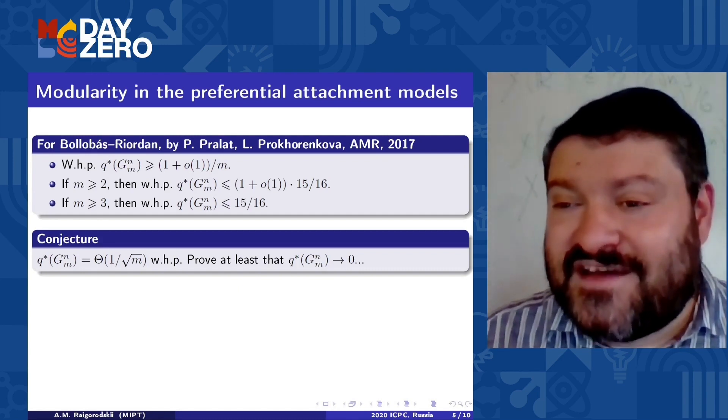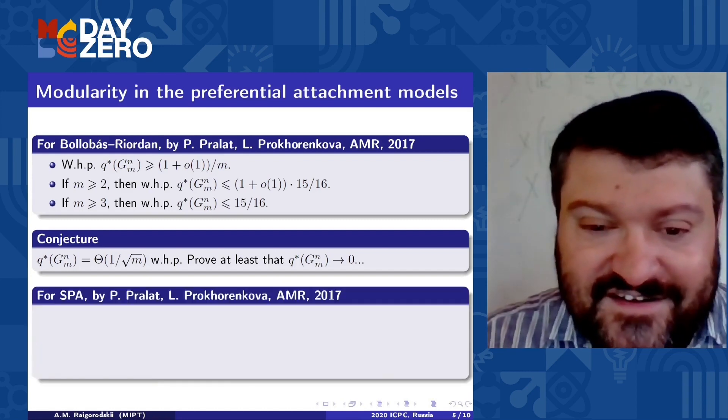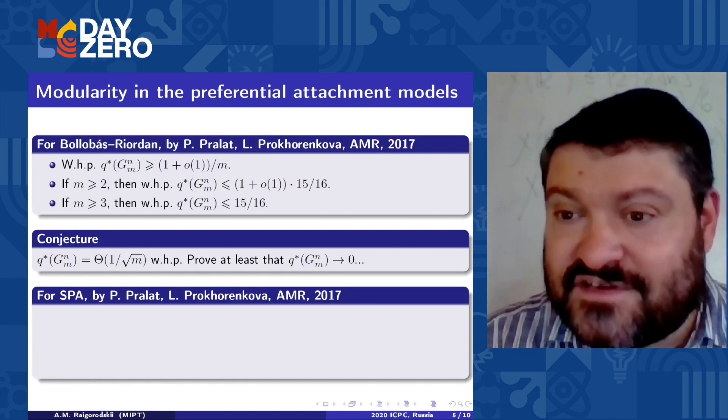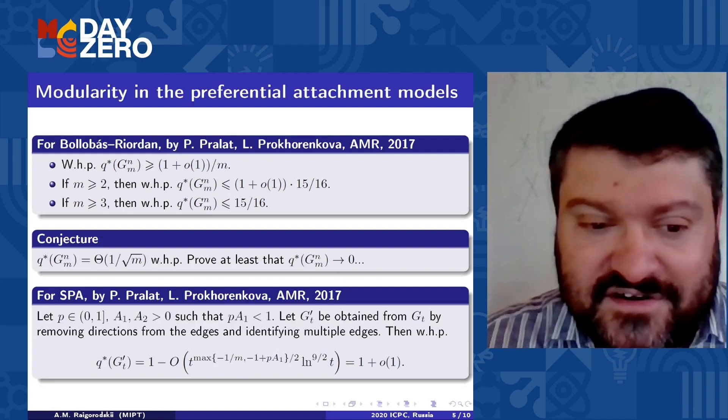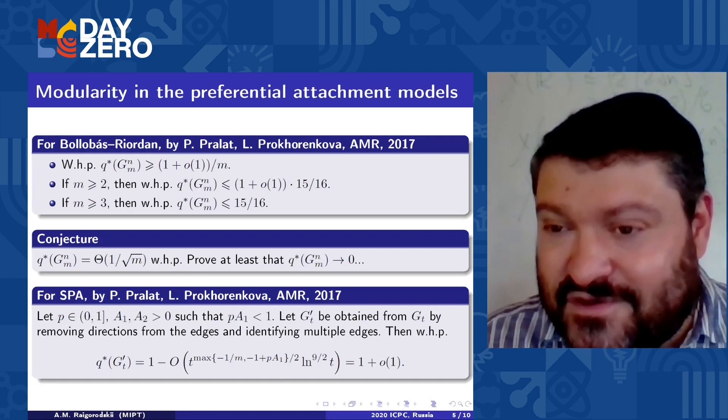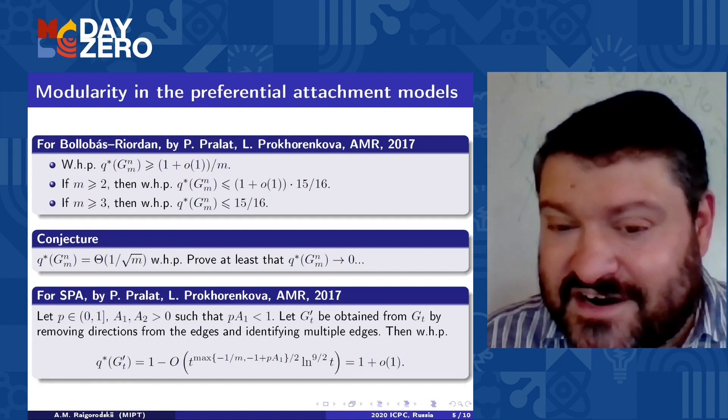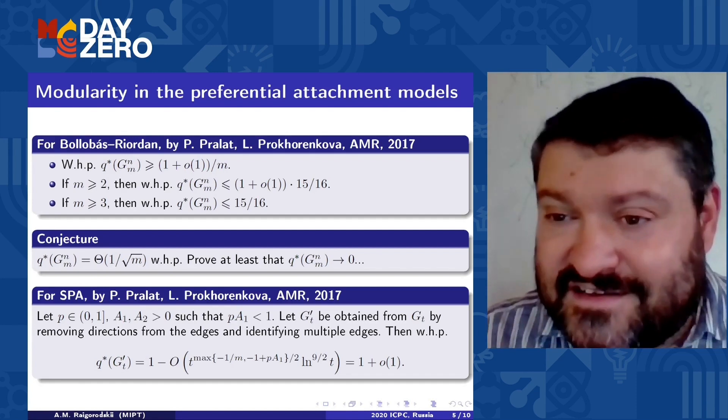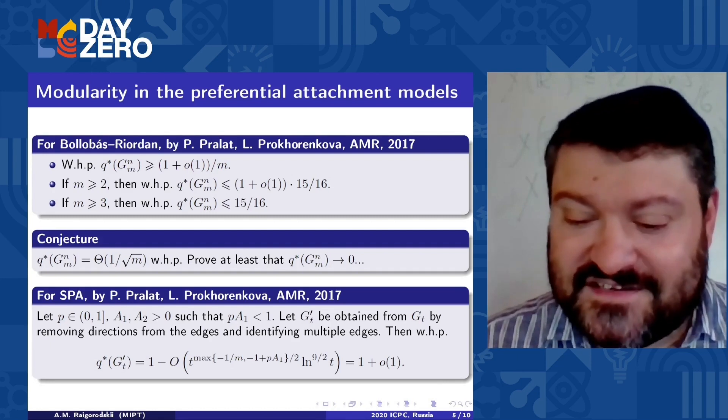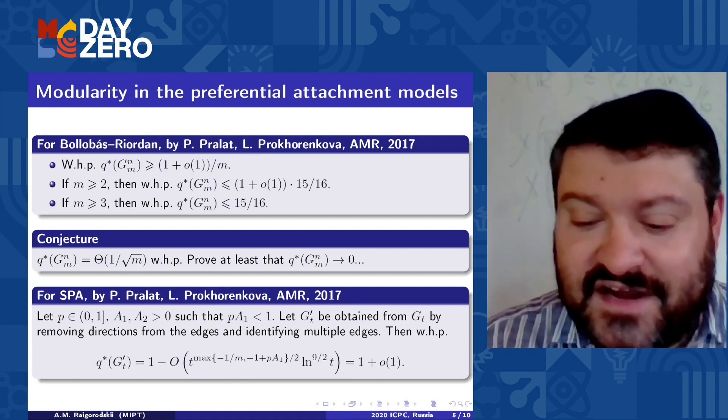And of course, everyone is invited to join us and to try to prove this conjecture. And for SPA model for spatial preferential attachment. The same authors in the same year and, in fact, in the same paper succeeded in proving this terrible mathematical bound. But mostly it means that Q star, the maximum modularity of this random graph, tends to one as t as the main parameter tends to infinity. So this is very important to understand such asymptotical properties of clustering characteristics.